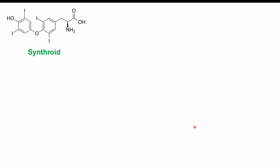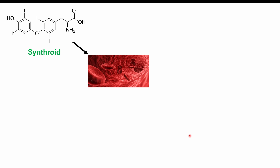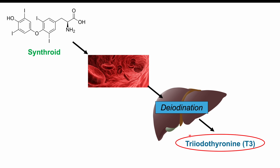When you consume levothyroxine on an empty stomach, it's absorbed into the bloodstream and travels to certain tissues and organs, including the liver. The liver is the main location where deiodonation occurs — the removal of one iodine atom — which produces triiodothyronine, or T3, the active form of thyroid hormone. T3 is essentially T4 minus one iodine atom.